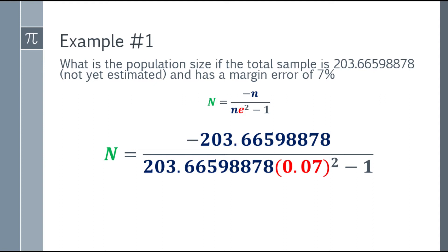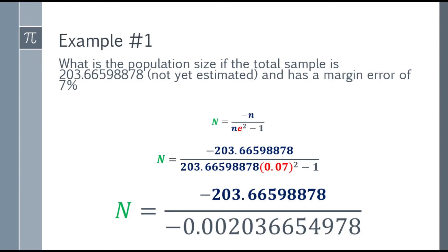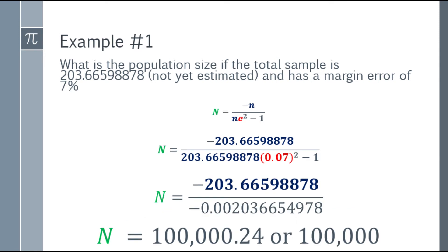To answer this, put 0.07 in your calculator, square it, then multiply it by 203 with the decimal. The answer, minus 1, will be the denominator. Our denominator will be negative 0.00203 and so on. Now, with the numerator and denominator, we can simplify it. Both are negative, so the answer will be positive. The final answer will be 100,000.24.